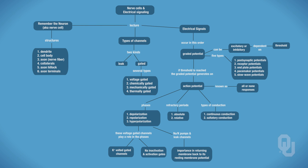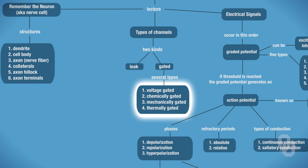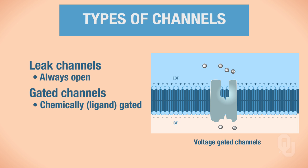In this outline, our focus is to look at the types of channels. We've already talked about leaked channels, but we're going to be focusing on gated channels. Once we focus on gated channels, we will focus on specific types of gated channels as well. We've already talked about leaked channels—which are always open—and we've already talked about chemically ligand-gated channels.